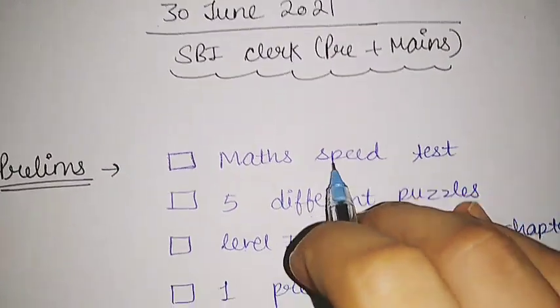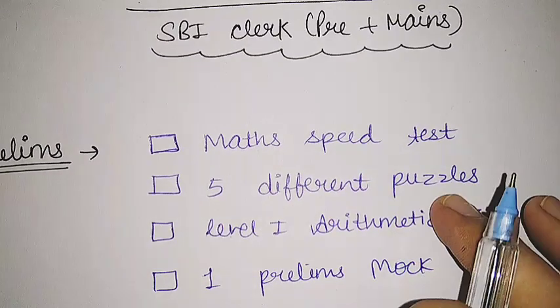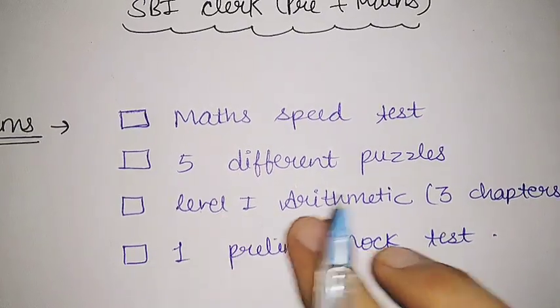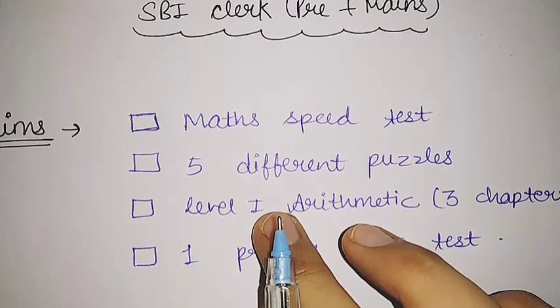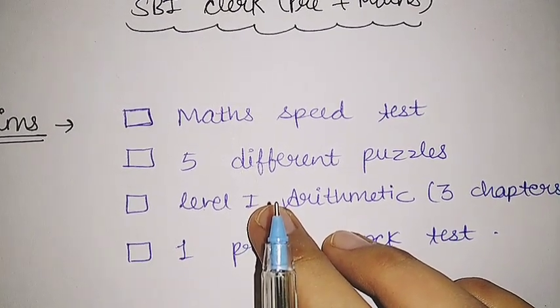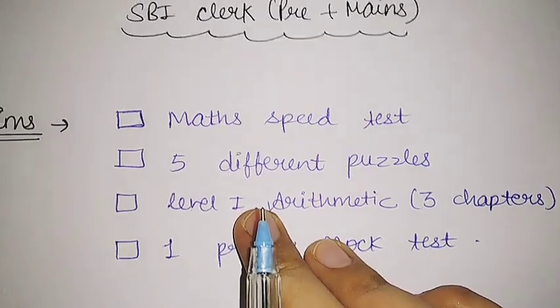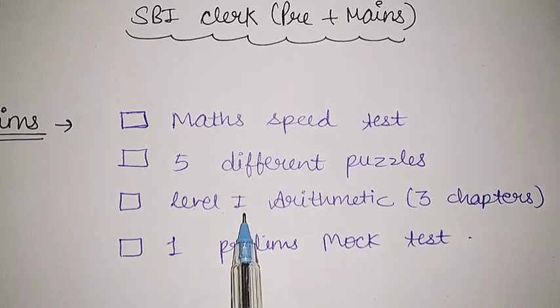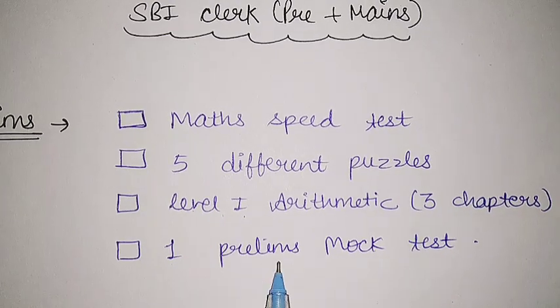For prelims tomorrow, I will keep the math speed test, then there are five different puzzles of prelims level. Tomorrow I will practice level 1 arithmetic of three chapters: ratio and proportion, percentage, and average. You can practice ten questions each from these three chapters, then tomorrow move to the next three chapters because level 1 questions are asked in prelims. Then there is one prelims mock test.